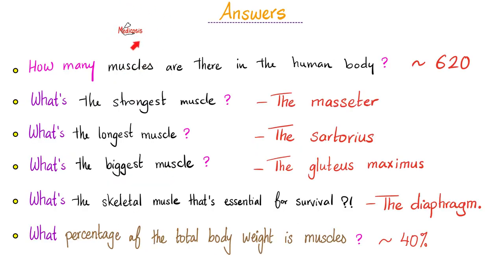Fun facts about skeletal muscles. How many skeletal muscles are there in the human body? 620. What's the strongest of them? The masseter. What's the longest? Sartorius. What's the biggest? Gluteus maximus. Which skeletal muscle is essential for survival? Your diaphragm. And your muscles make about 40% of your total body weight. What's the strongest smooth muscle in your body? The uterus.